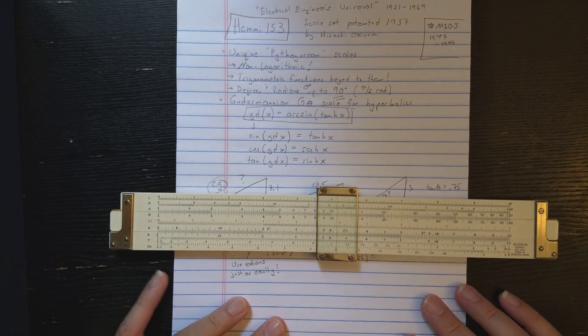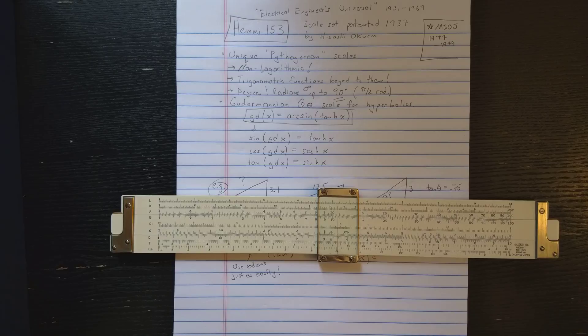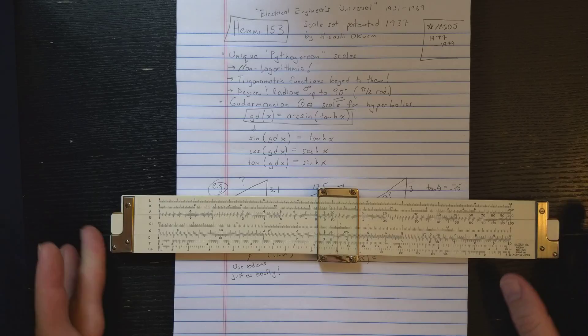So these I will use in the examples to show you how the Goudermannian function allows this slide roll to compute the hyperbolics, only adding one scale. And that's actually the content of Okora's patent. And he says, the main thing here is how I can add the one scale and I can get all the hyperbolic trigonometric functions on my slide roll.